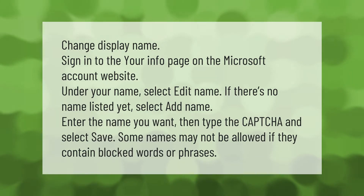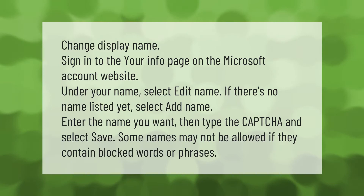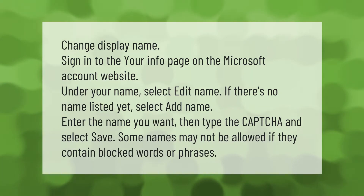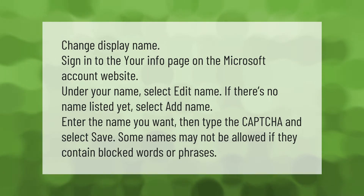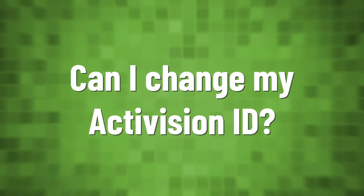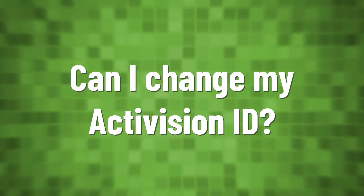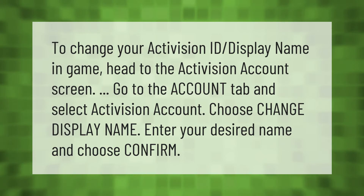To change your display name, sign in to the Your Info page on the Microsoft account website. Under your name, select Edit Name. If there's no name listed yet, select Add Name. Enter the name you want, then type the captcha and select Save. Some names may not be allowed if they contain blocked words or phrases.